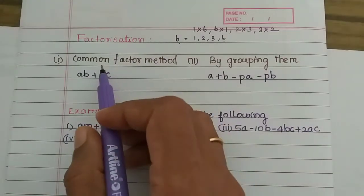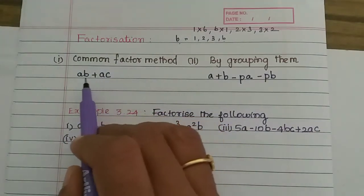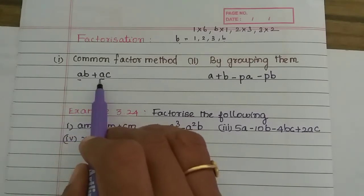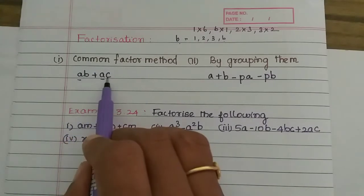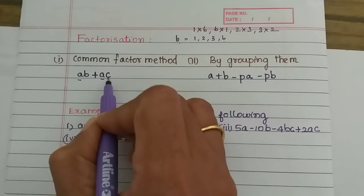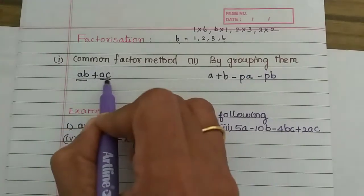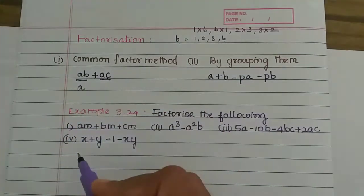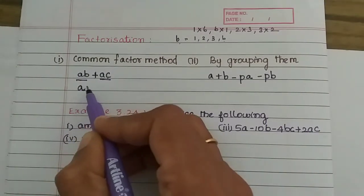The first method is the common factor method. We look at 2 terms — if there is a common number or a common variable, we can take it out. For example, AB plus AC — plus and minus mean terms have been created. This is one term and this is one term, so there are two terms.